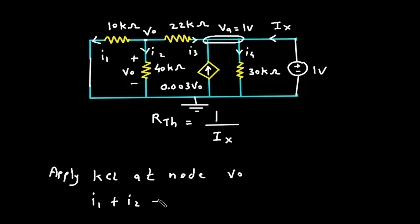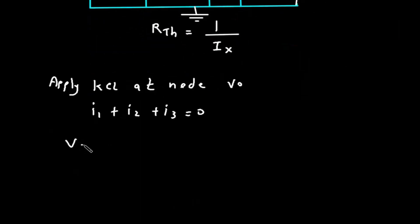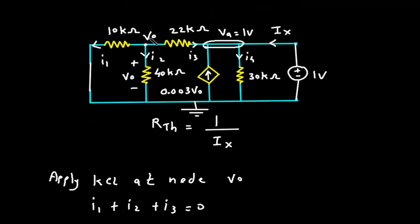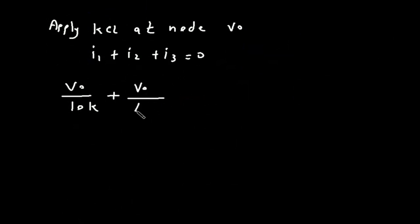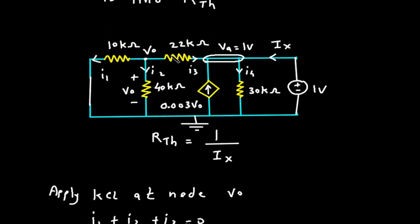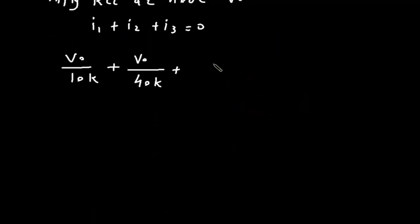I1 plus I2 plus I3 is equal to 0. I1 is equal to VO minus 0 divided by 10K. I2 is VO minus 0 divided by 40K. I3 is VO minus 1 divided by 20K, and VO minus 1 by 20K is equal to 0.